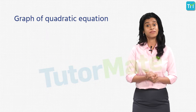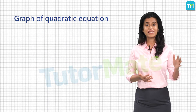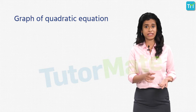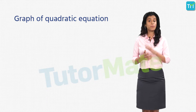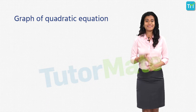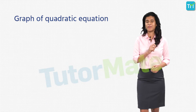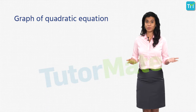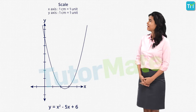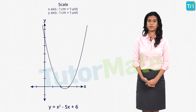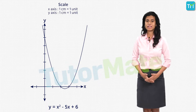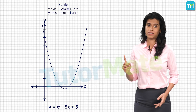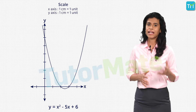Now let us look at this from a graphical point of view. When we studied polynomials we saw how quadratic polynomials can be represented graphically. Do you remember the shape of the graph of a quadratic polynomial? That's right, it was a parabola. Similarly, even quadratic equations are represented by parabolas. For example, this is the graph of the quadratic equation x squared minus 5x plus 6, and you will see that the graph is an upward parabola that cuts the x-axis at 2 points.